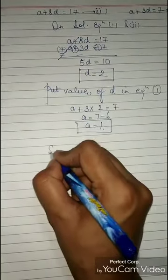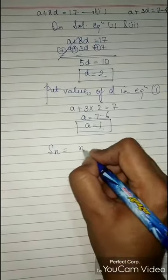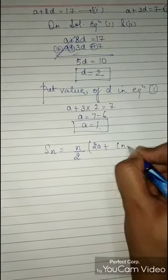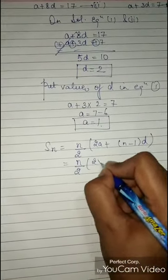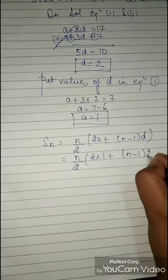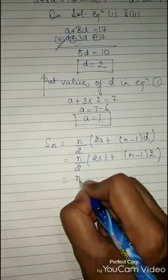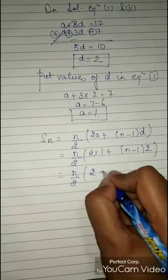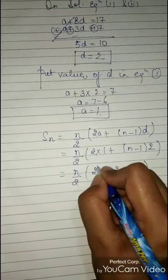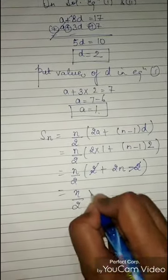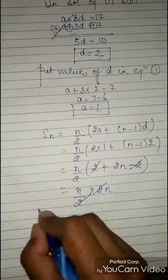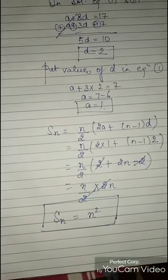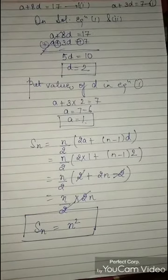Now finding the sum of n terms: Sn = n/2 × (2a + (n−1)d) = n/2 × (2×1 + (n−1)×2) = n/2 × (2 + 2n − 2). The 2s cancel, giving Sn = n². The sum of n terms of this AP is n².